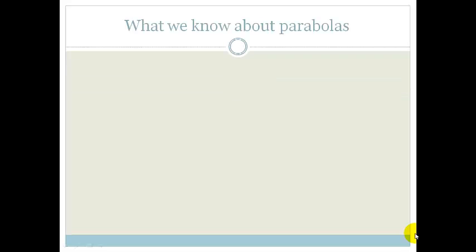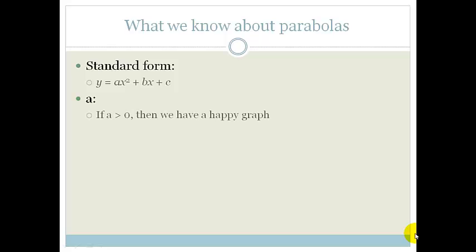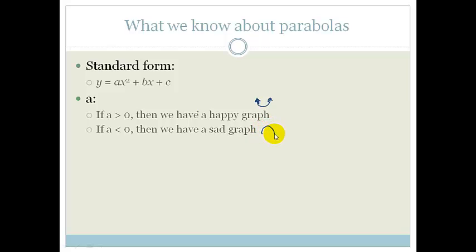First of all, what do we know about parabolas? We know that the standard form of the parabola is a quadratic equation: y = ax² + bx + c. If a is greater than 0 it means we have a happy graph, which means the graph is concave upwards. Whereas if a is smaller than 0 then we have a sad graph — the graph is concave down.